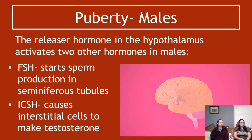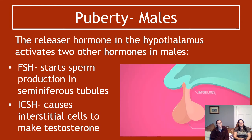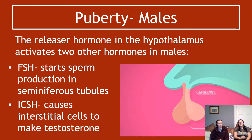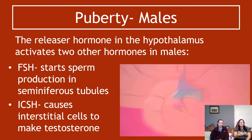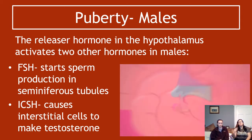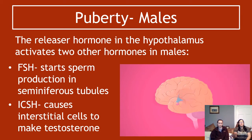Looking at puberty in males: the releaser hormone is released from the pituitary gland and the hypothalamus. It activates two other hormones in males. The first is FSH, which starts sperm production in the seminiferous tubules. The second is ICSH, which causes interstitial cells to start making testosterone. The key idea here is that it is the releaser hormone that triggers the pituitary gland — before the releaser hormone is released, these two hormones are not being produced. The releaser hormone switches on due to some signal in the person's body indicating readiness for puberty.